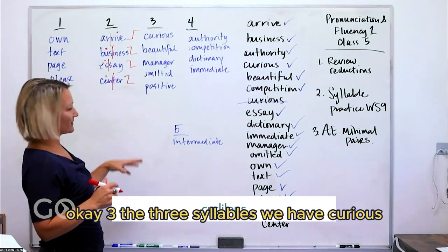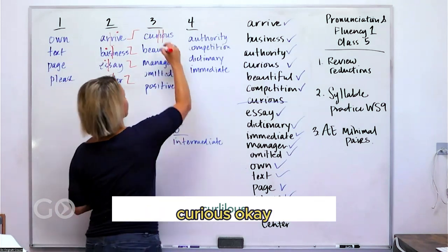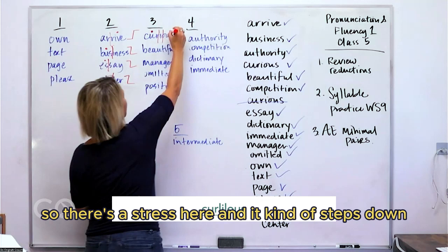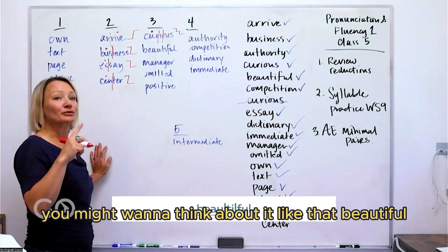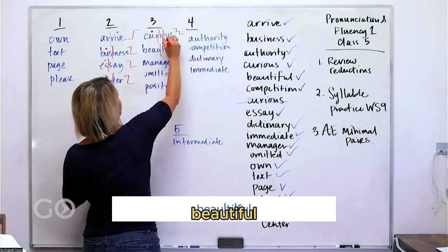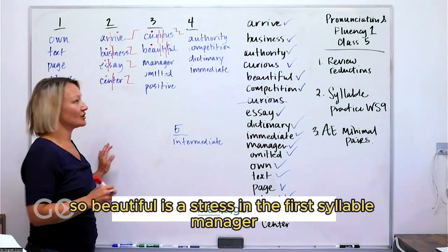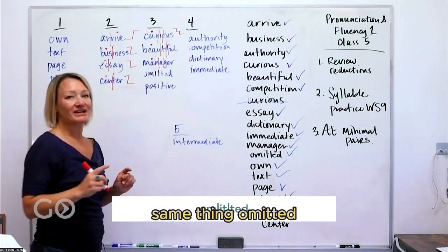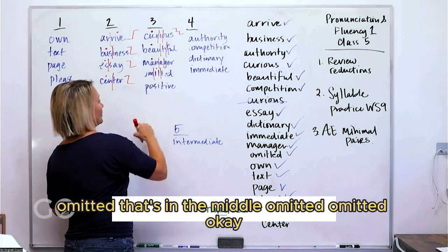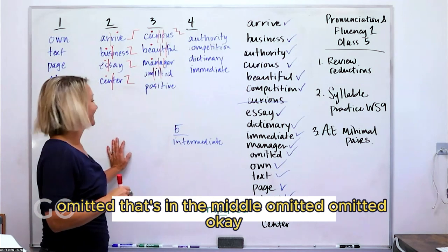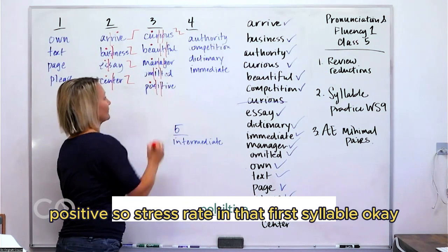The three syllable words. We have curious. Curious. So there's a stress here and it kind of steps down. So you might want to think about it like that. Beautiful. Beautiful is a stress in the first syllable. Manager. Same thing. Omitted. Omitted. That's in the middle. Omitted. Positive. Positive. So stress right in that first syllable.